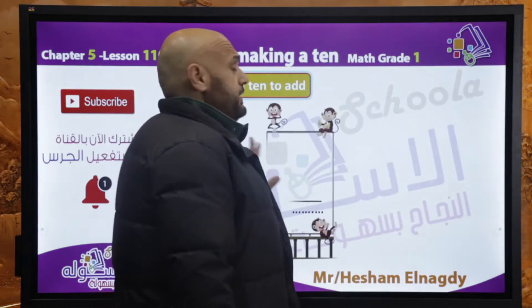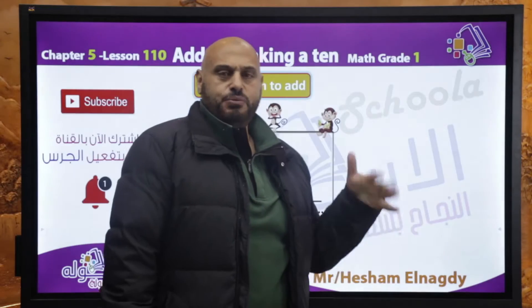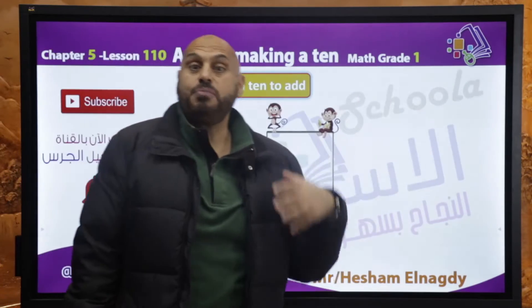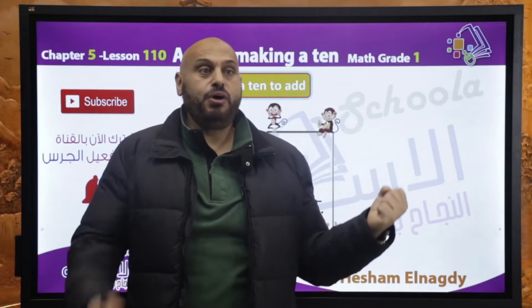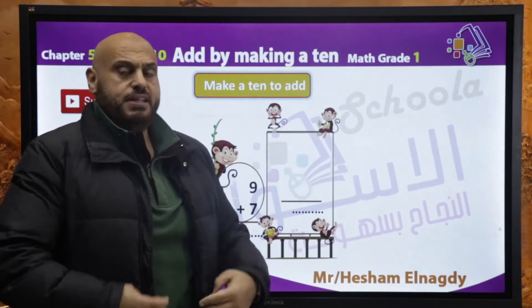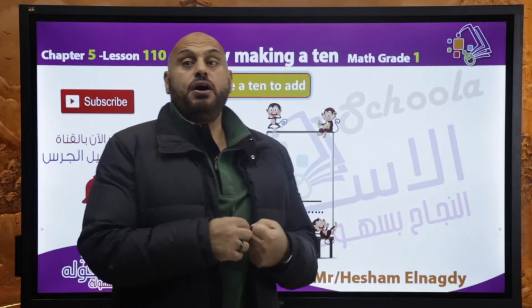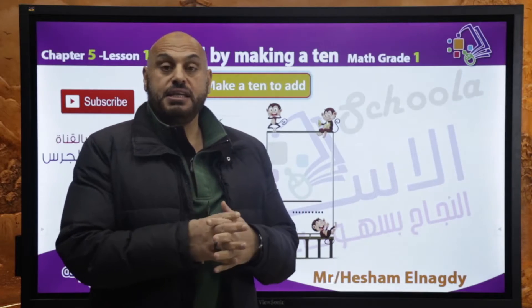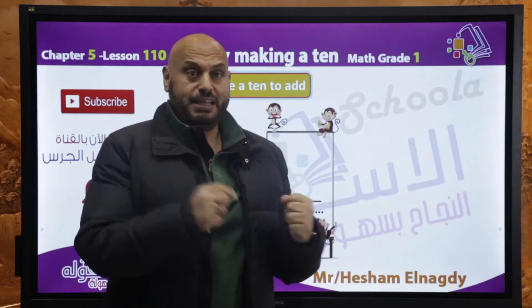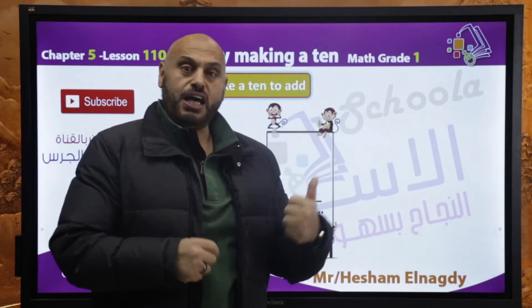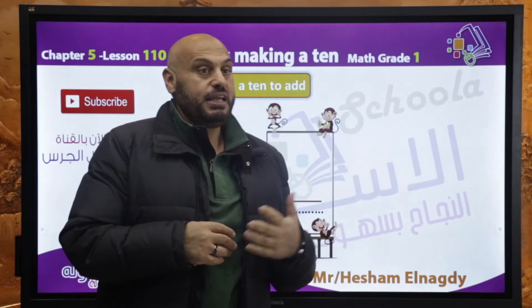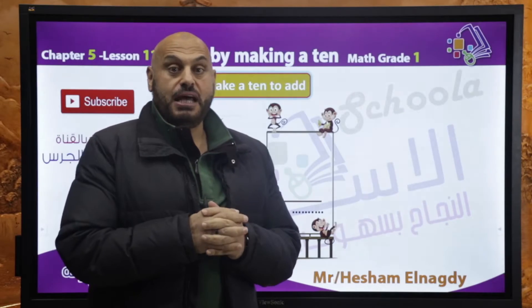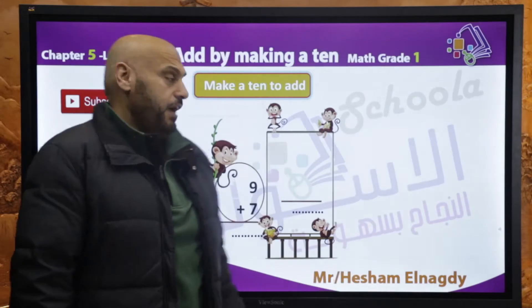In the previous sessions — 109, 108, 107 — we talked about components of number 10. وعرفنا إن كل نمبر له الفرين بتاعه (every number has its friend/pair). الـ 1 فرينه الـ 9، والـ 2 فرينه الـ 8، والـ 3 فرينها الـ 7، والـ 4 فرينها الـ 6، والـ 5 فرينها الـ 5.